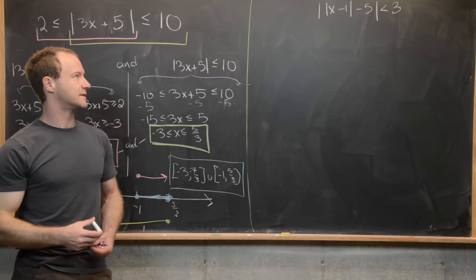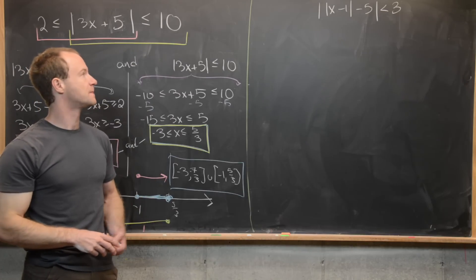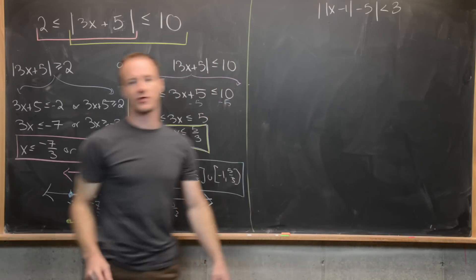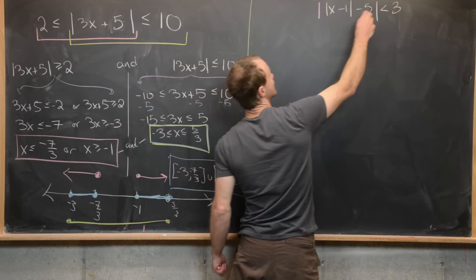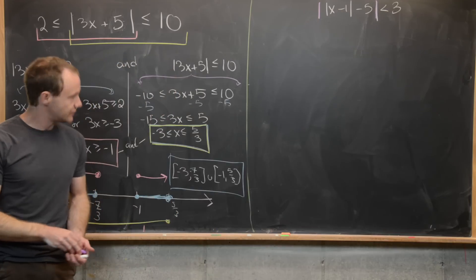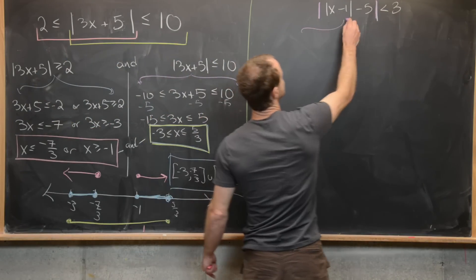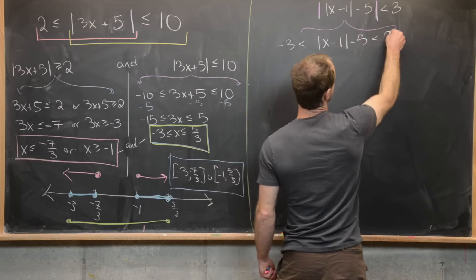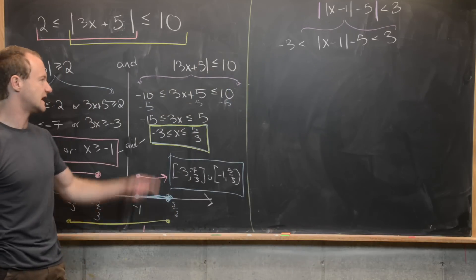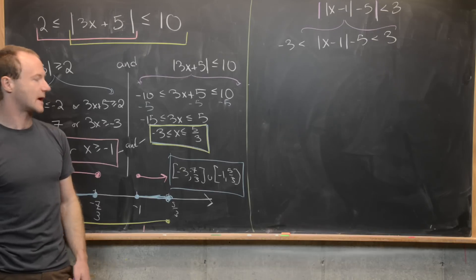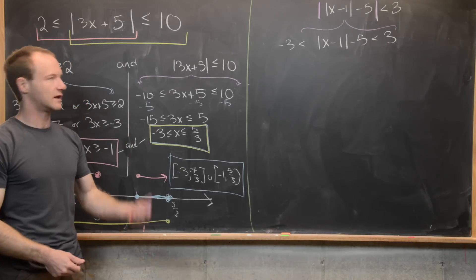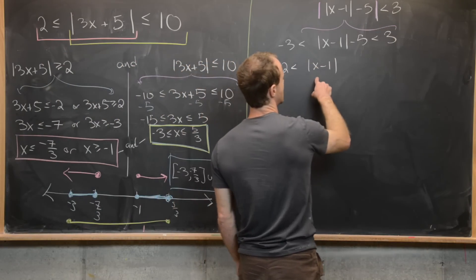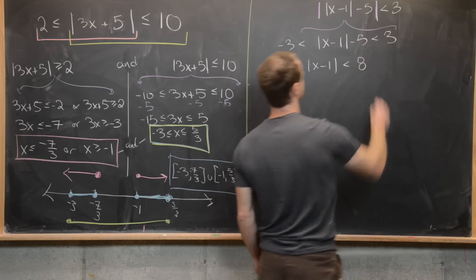For our next example, we have a nesting of absolute values: the absolute value of the absolute value of x minus 1, minus 5, is less than 3. The first thing we want to do is unravel this outer absolute value. That splits into the triple inequality: negative 3 is less than the absolute value of x minus 1 minus 5, which is less than 3. Then we add 5 to all sides to isolate the inner absolute value, giving us 2 is less than the absolute value of x minus 1, which is less than 8.